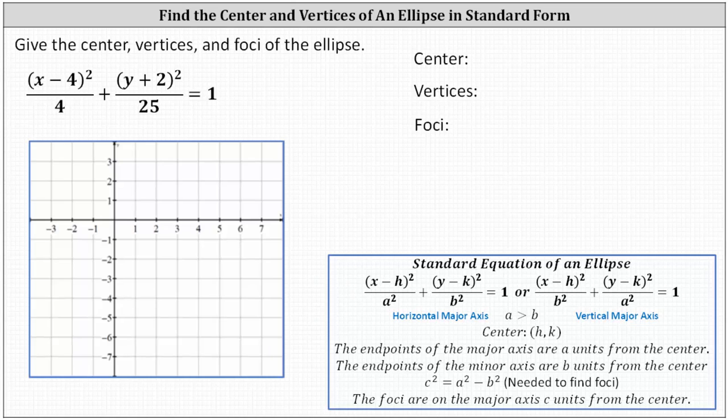We're asked to give the center, vertices, and foci of the ellipse. Let's take a look at the notes below. There are two forms of the standard equation of an ellipse based upon whether the ellipse has a horizontal or vertical major axis.